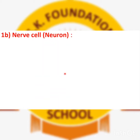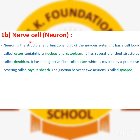The main part of the nervous system is the neuron, or nerve cell. Just as your body has cells as functional units, the nerve cell is the structural and functional unit of the nervous system. Nerve cell components include: cytone, nucleus, cytoplasm, dendrites, axon, myelin sheath, and synapse. We now learn the definition of each of these terms.